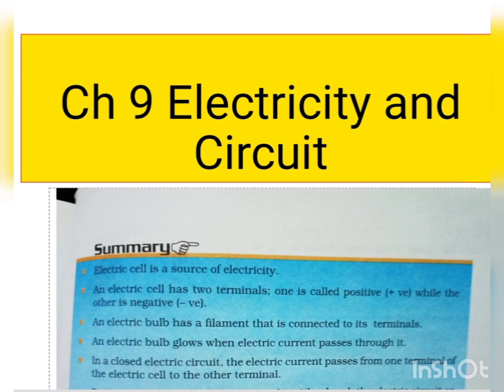Next point: an electric bulb has a filament that is connected to its terminals. The filament is a thin wire attached inside the bulb. Sometimes you will see a fused bulb — when that wire breaks, we say the bulb is fused. Why does the bulb not glow? Because electricity is going from one terminal, but due to the filament break, it is not reaching the other terminal. It means our circuit is not complete.